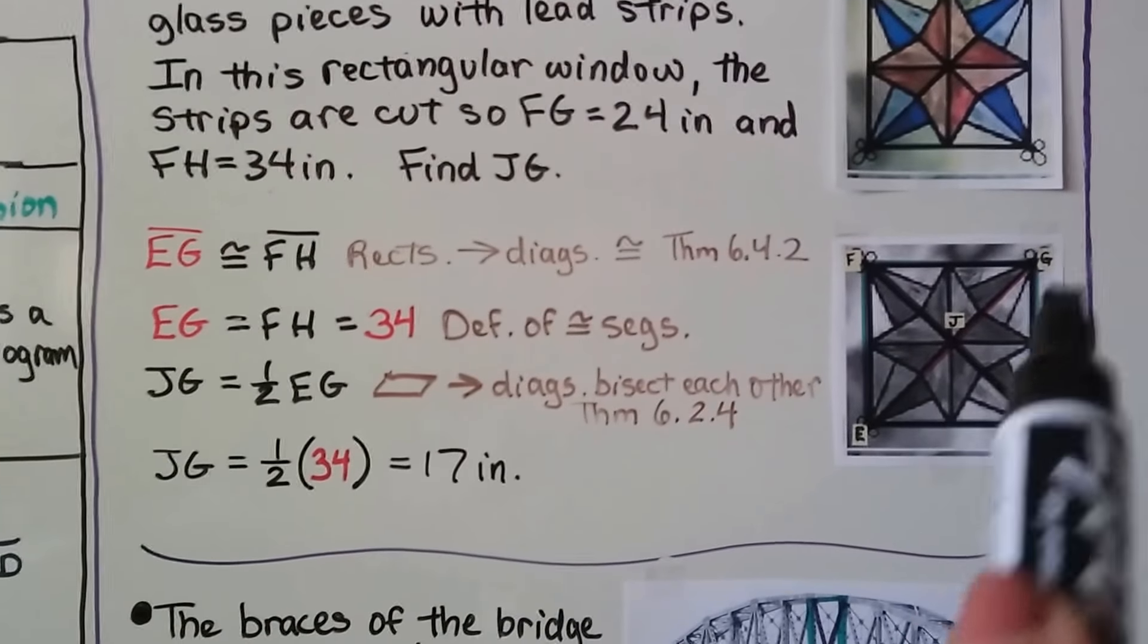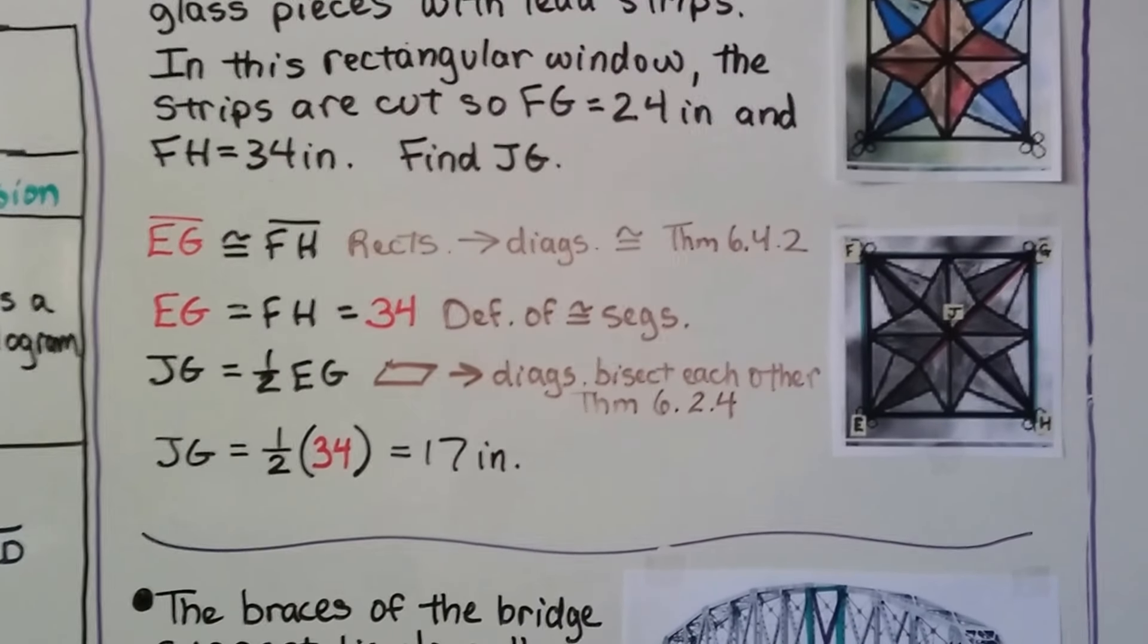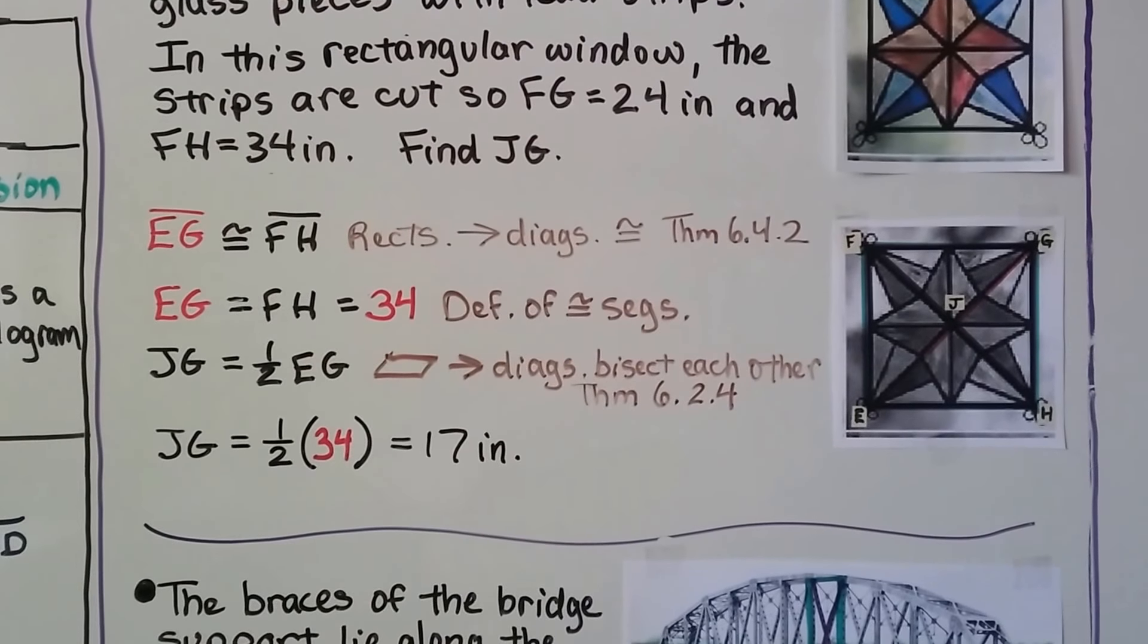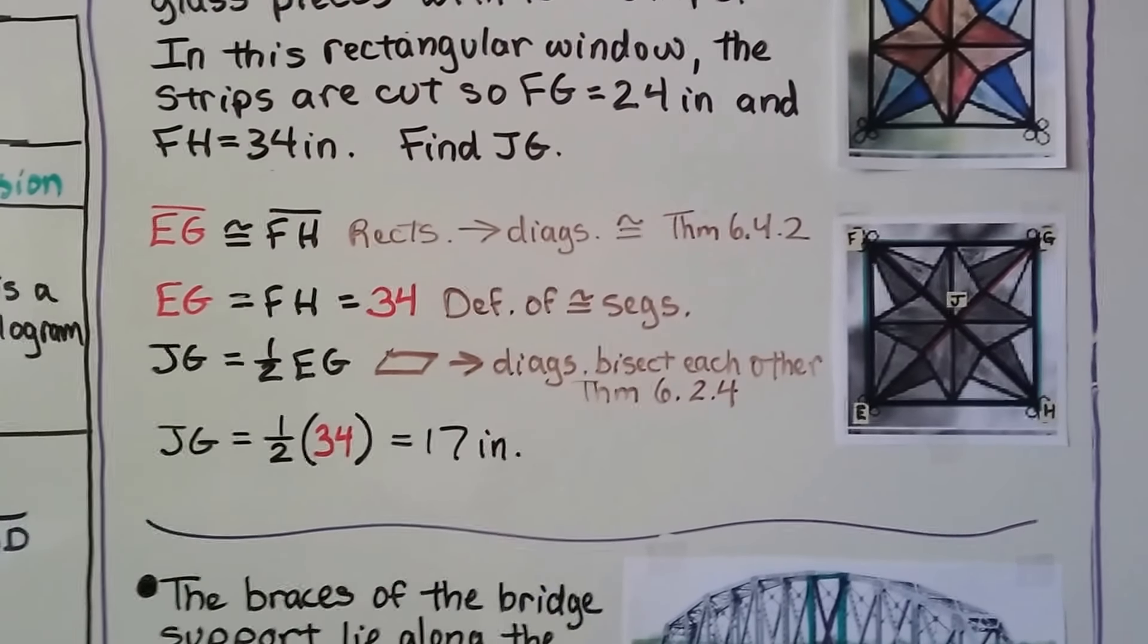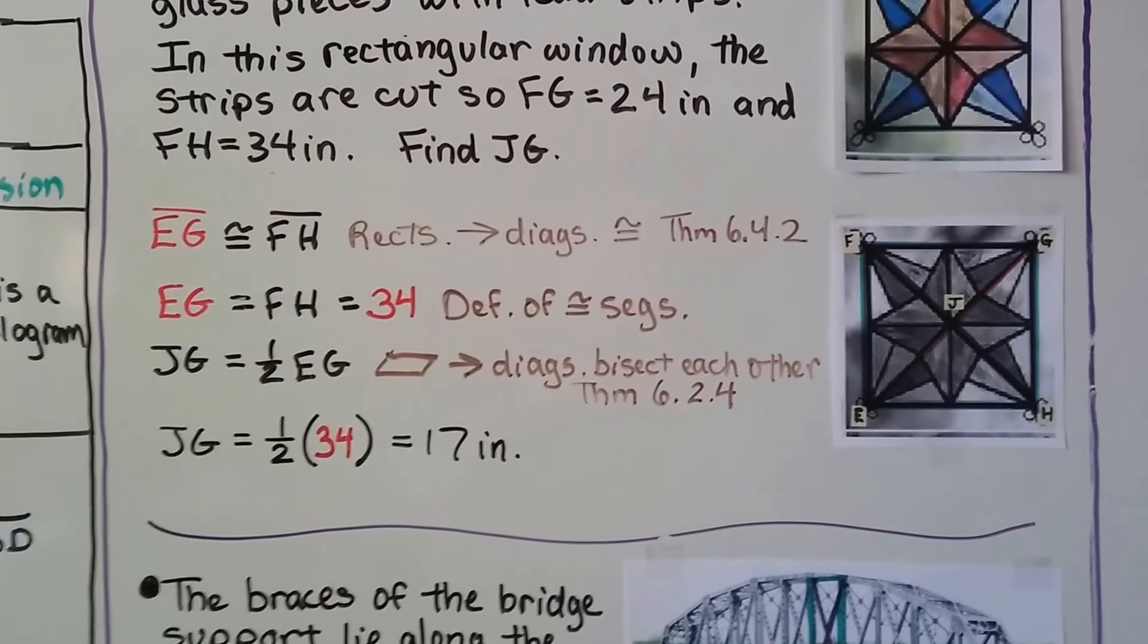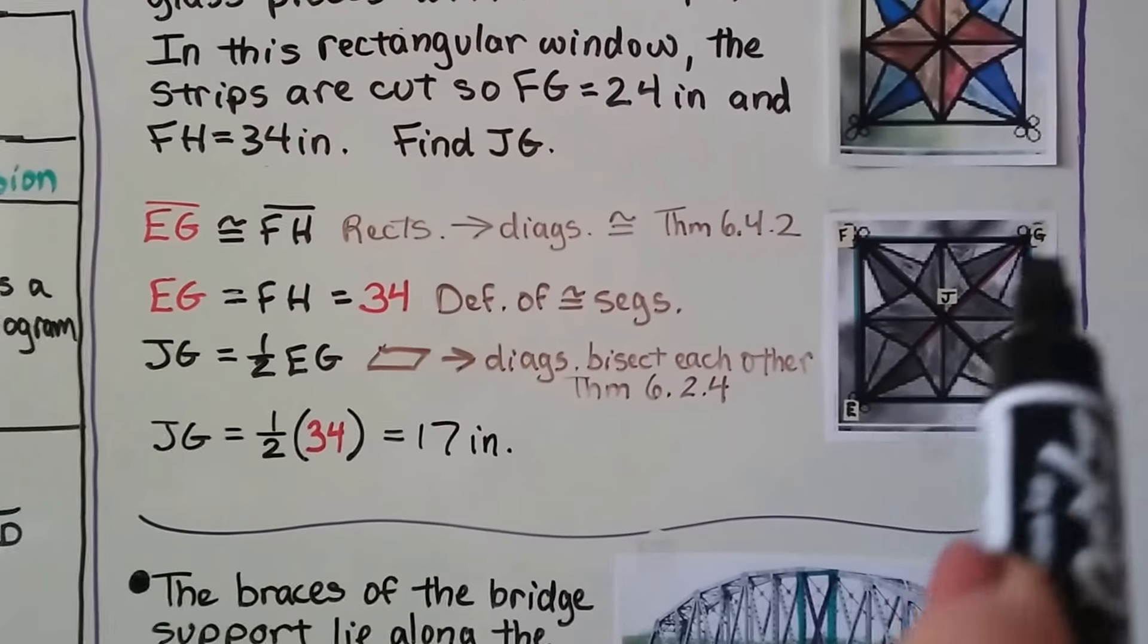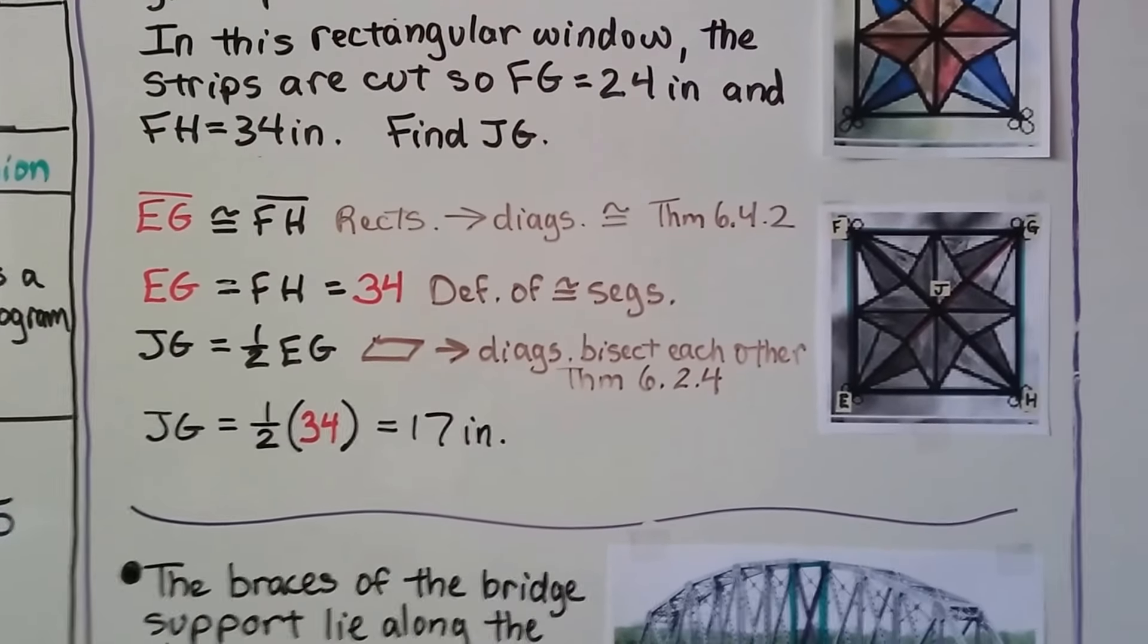And JG, this little piece, is half of EG, which means it's half of 34. This is from our lesson 6.2. It was the fourth theorem that said if it's a parallelogram, then the diagonals bisect each other. So we know that JG, this little piece up here, this segment, is 17 inches.